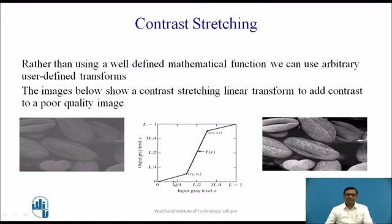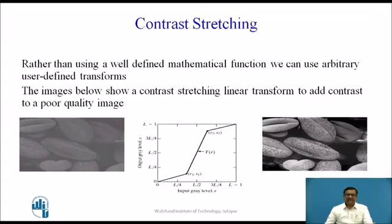If you look at the transform, the input pixels within the range 0 to R1, S1 are enhanced very little, because the slope of this line is less compared to the line between points R1, S1 and R2, S2. The slope of the line between R1, S1 and R2, S2 is greater, so the input pixels within this range will be enhanced more, improving the contrast of the image.